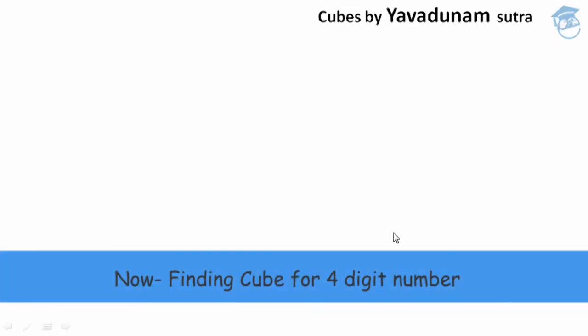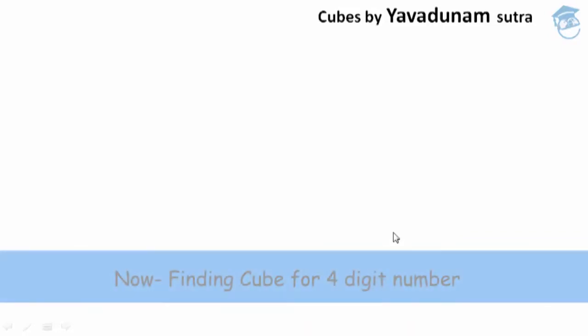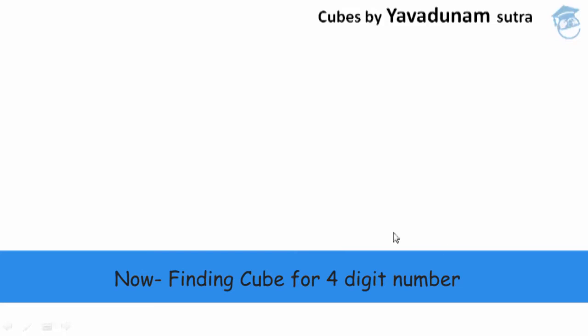Hi friends, welcome to Edupidae World, this is Varun Ganga. In our last session we saw some examples of how to find the cube of a given four-digit number near bases like 2000, 3000, 4000 and so on. In this session, with regard to the same concept, we are going to find the cube of a given four-digit number using the Avadunam Sutra.